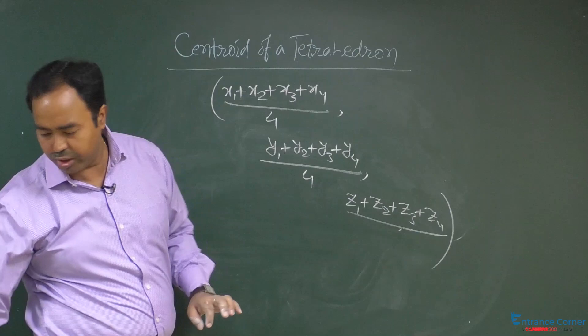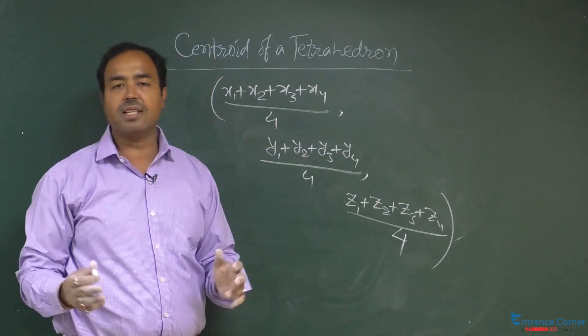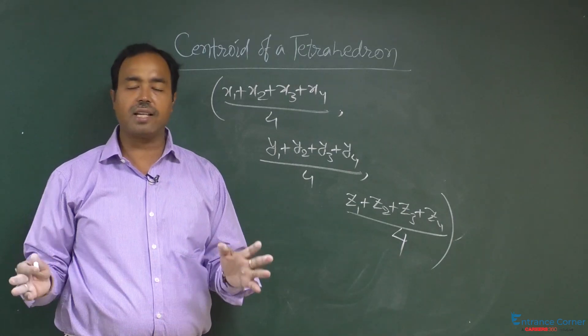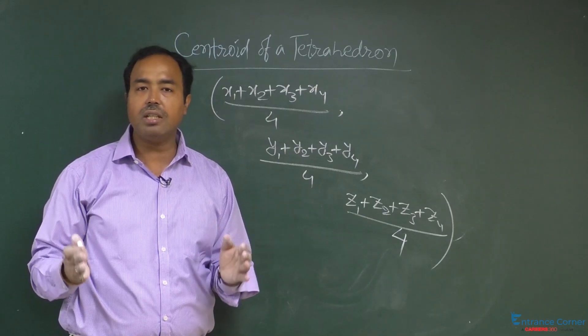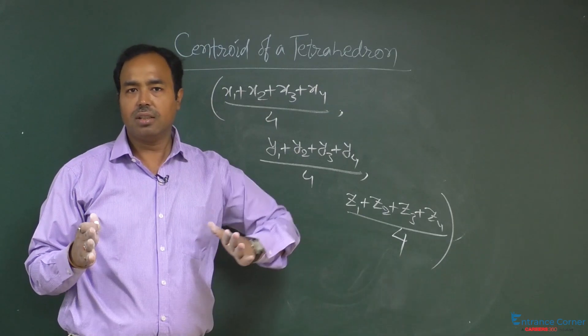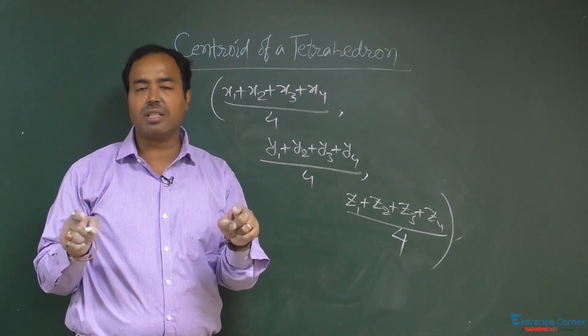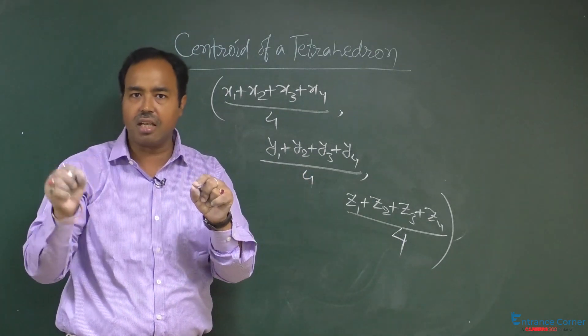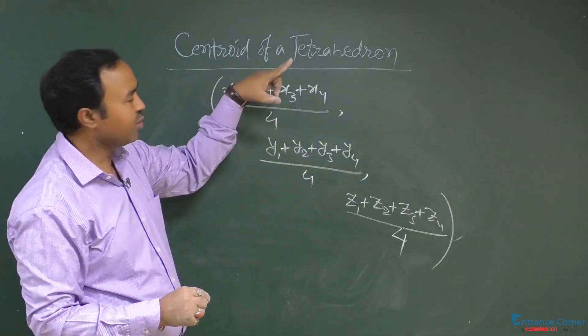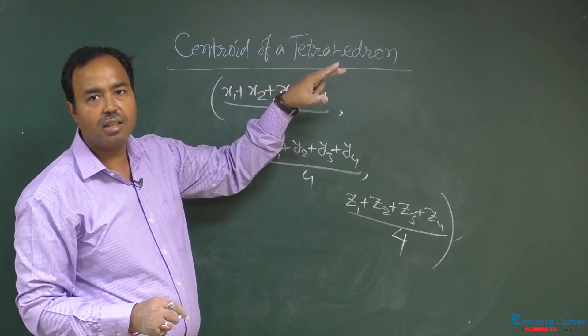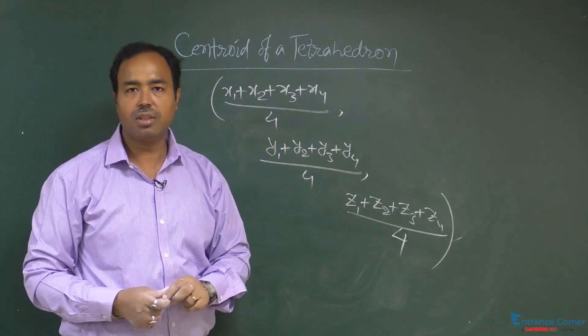And student, here also you can remember you can define the centroid of a tetrahedron with the same definition where the medians of the sides meet. But when the medians of the sides of the triangle meet, there are three centroids. So all the centroids when we join with the other vertices, then the centroid of the tetrahedron is formed. Thank you.